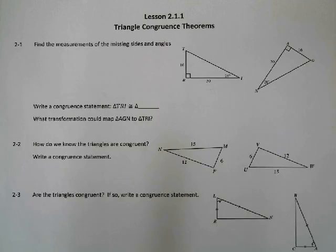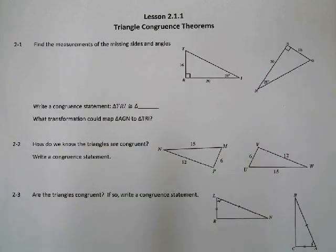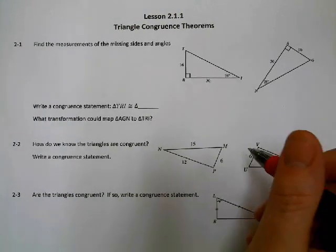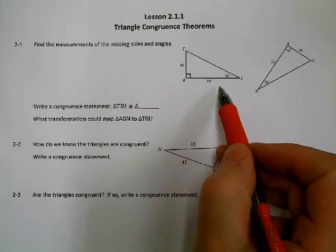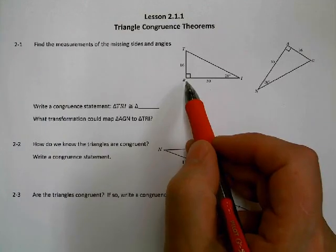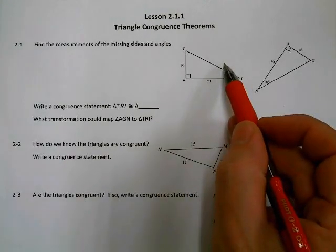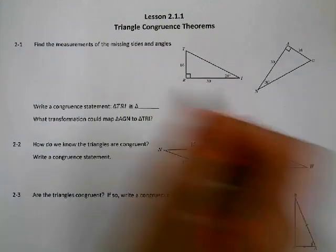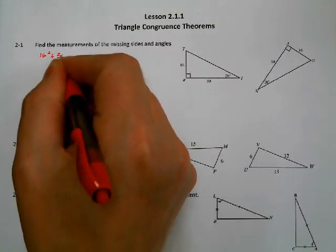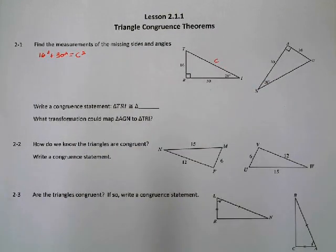On 2-1, we've got two triangles and we're supposed to find the measurements of the missing sides. We can tell that these triangles are going to end up being congruent to each other, but we'll get to that a little bit later. So if I'm missing sides and it's a right triangle, remember from previous courses that you can use the Pythagorean Theorem to find the third side. The Pythagorean Theorem says that a squared plus b squared equals c squared — the hypotenuse squared.